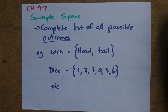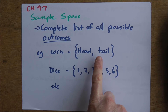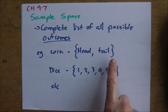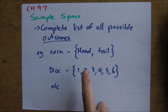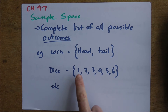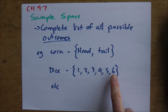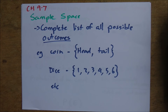Sample space is simply a complete list of all possible outcomes. For a coin, heads and tails are the only possibilities, written in curly brackets — everything within those brackets is what's possible. For a dice, it's 1, 2, 3, 4, 5, or 6. If we were listing the sample space for winning Tats Lotto, there would be millions and millions of possible entries.